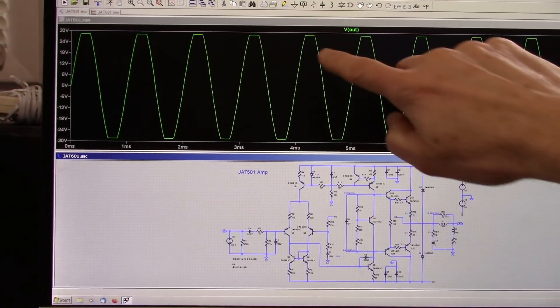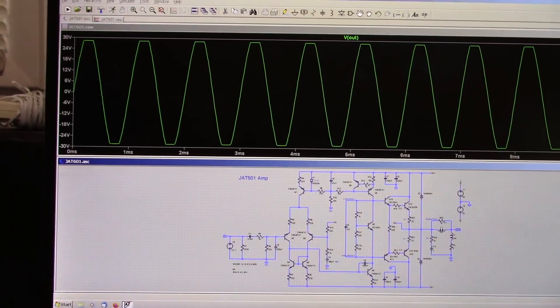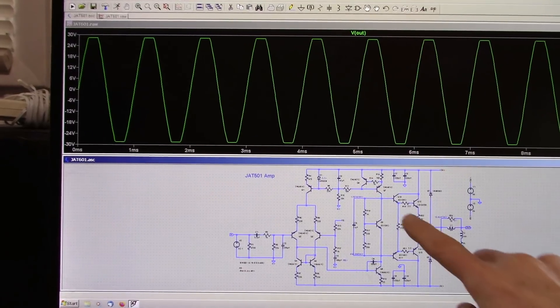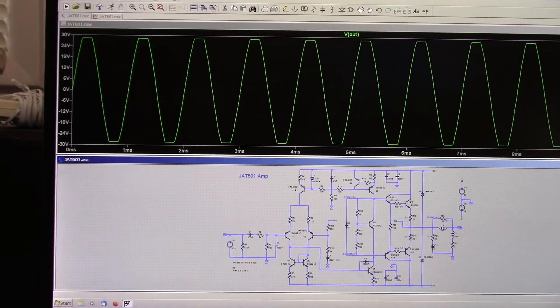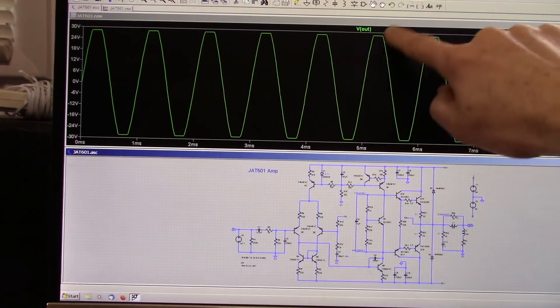After running the simulation, I'm getting 28.38 volts on both peaks exactly the same. At 4 ohms I was getting 30.34 or something like that. Of course, the amplifier is going to put out a smaller voltage because you're going to lose more in the amplifier because it's dealing with higher current.